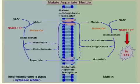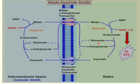NAD will combine with malate and malate dehydrogenase will reform oxaloacetate, giving us NADH inside the mitochondrial matrix. In order to get more NADH, we need to go through this pathway again, so oxaloacetate will combine with glutamate to form aspartate. The glutamate becomes alpha-ketoglutarate, which then goes through the malate alpha-ketoglutarate shuttle and comes out of the matrix.